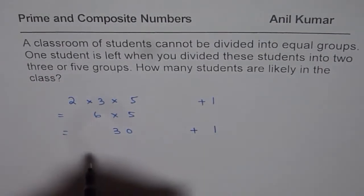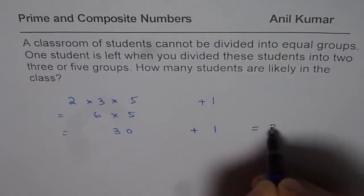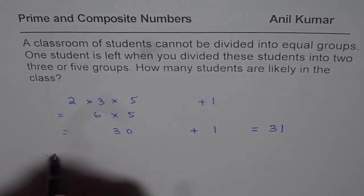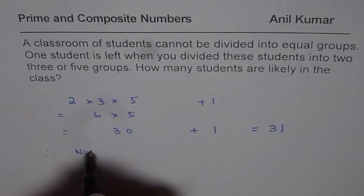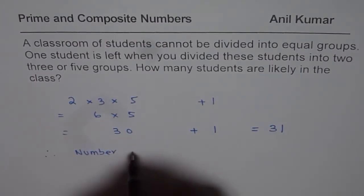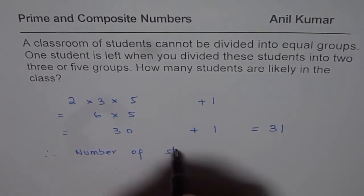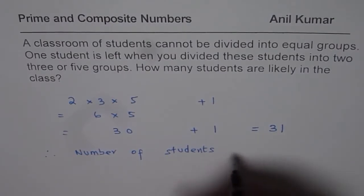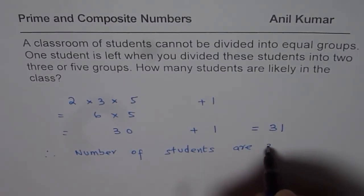Add one to it. So when you add one to thirty, you get thirty-one. Therefore, the number of students are thirty-one.